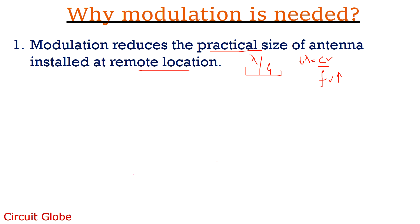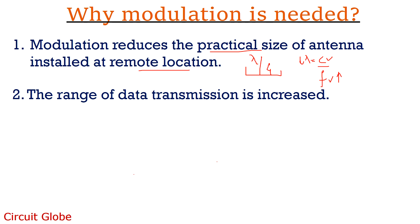According to the second point, with the help of modulation, transmission distance can be increased. The reason behind this is that when a low frequency signal is transmitted to a long distance, it experiences severe attenuation. But with the help of modulation, when the frequency of the signal is increased, attenuation automatically decreases. Due to this reason, it is said that modulation increases the range of data transmission.